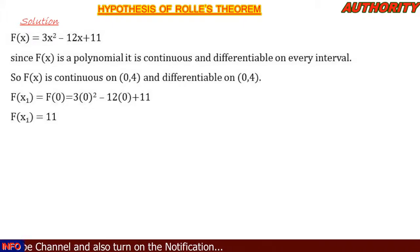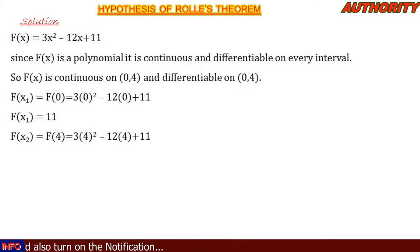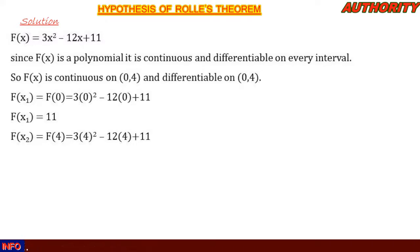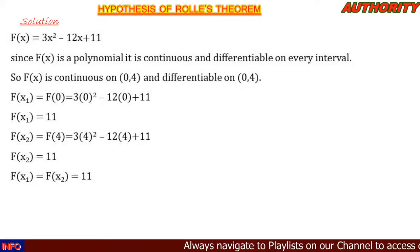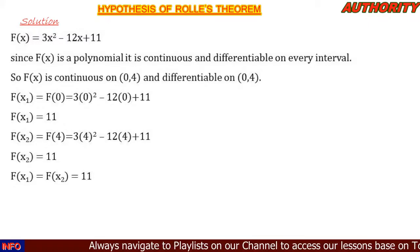Now let's check f(x2): substituting x = 4 into the function, we get 3(4)² − 12(4) + 11, which simplifies to f(x2) = 11. We can see that f(x1) equals f(x2). All three conditions are now satisfied: the function is continuous, differentiable, and f(x1) = f(x2).